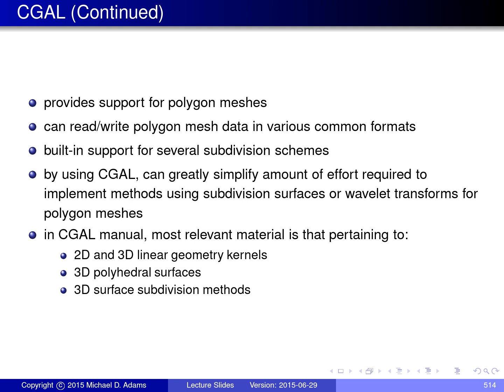Amongst the many things for which CGAL provides support, it provides support for polygon meshes. You can read and write polygon mesh data in various common formats, including the OFF format or object file format. It has built-in support for several subdivision schemes, including Loop Subdivision, Catmull-Clark Subdivision, Doo-Sabin Subdivision, and a few others. By using CGAL, we can greatly simplify the amount of effort that's required to implement subdivision surface algorithms and wavelet transforms and other algorithms for polygon meshes.